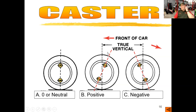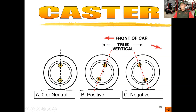For example, positive caster on a minivan is around one and a half degrees from vertical, so it would be tilted back one and a half degrees. On a Cadillac CTS-V, such as a red one we have in our shop at school, it would be six and a half degrees. It's going to require a little bit more steering effort, but it also gives us more return to center and it keeps the car going in a straight line.